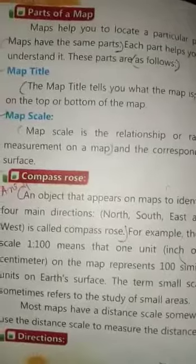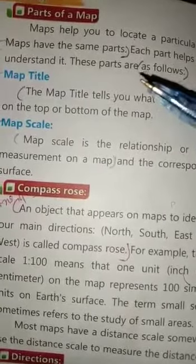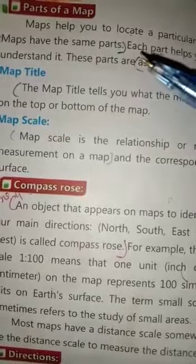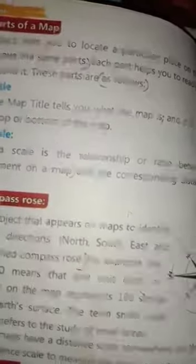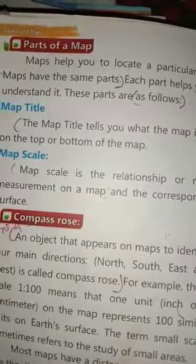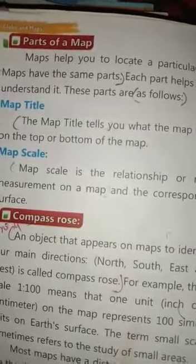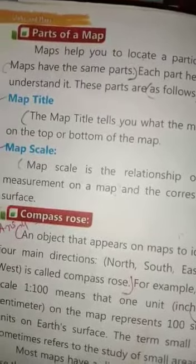Students, aap ki social study ki book hai jis ka hum chapter number first part padh rahe hain. Page number four, topic of our lesson: Parts of a Map. A map helps you to locate a particular place on the earth. Naqsha aap ko kisi bhi muqam per ek khas jagah talash karne mein madad karta hai.